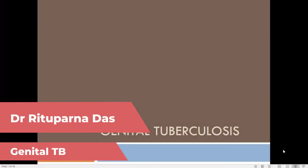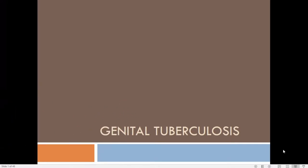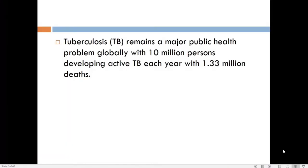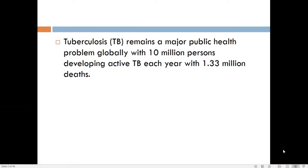We will discuss genital tuberculosis today. This is a very important topic, especially in countries like India. Tuberculosis remains a major public health problem globally, with 10 million persons developing active tuberculosis each year and 1.33 million deaths. More than one fourth of this global incidence is with our country, India.